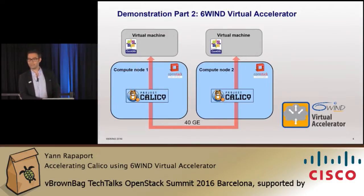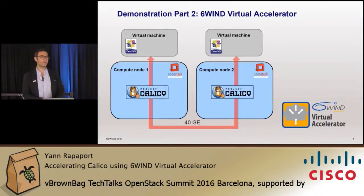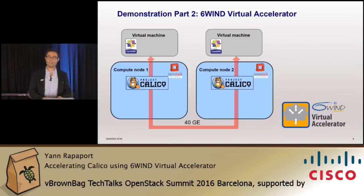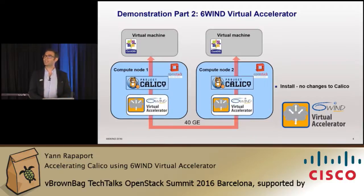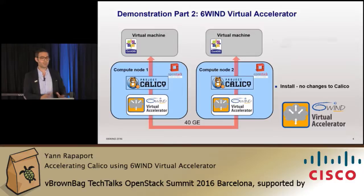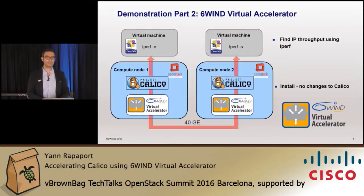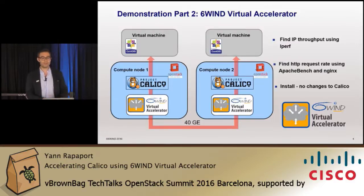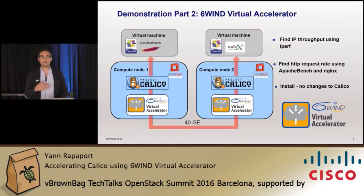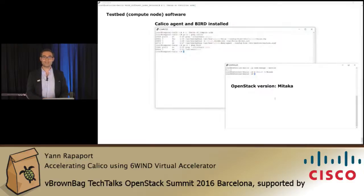Then in the same system, we will very easily install Virtual Accelerator and run the same tests again. There is no change to the Calico configuration and no change to the environment. We run IPERF again, we run Nginx and Apache Bench again, and we see the results.